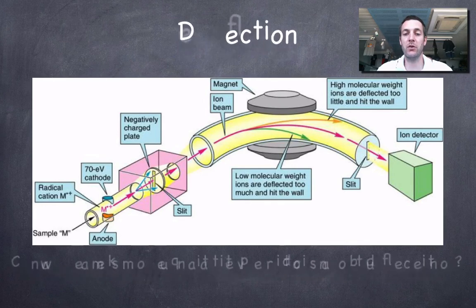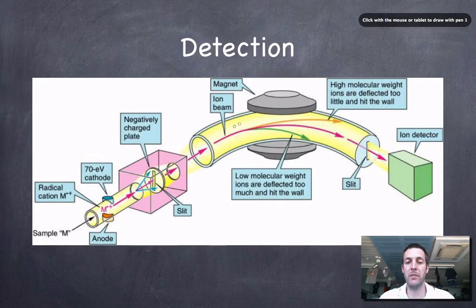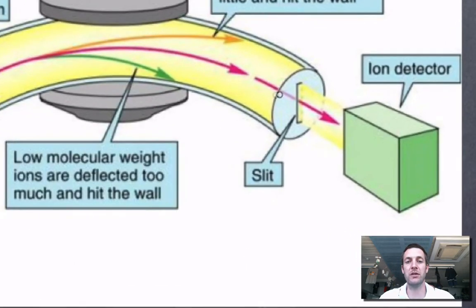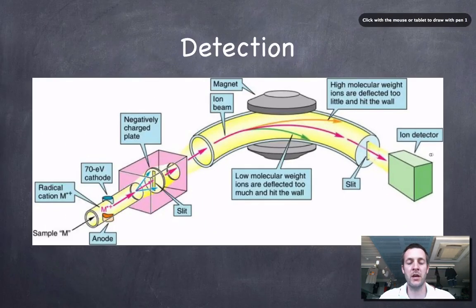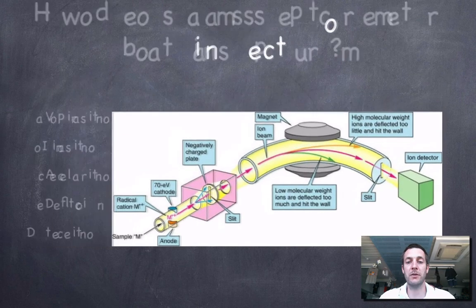That's the deflection stage. We're kind of almost there. Our particle has made it round the bend and it's about to get through this slit and it's about to hit the ion detector. And that's what detection is. An electrical signal is generated by any ion that hits the screen in here and then that gets sent off to the computer. So that was the fifth and final of the stages in our mass spectrometer.